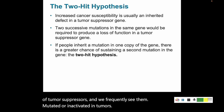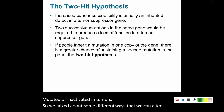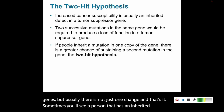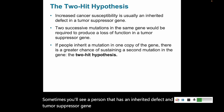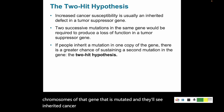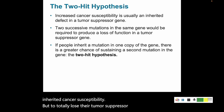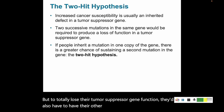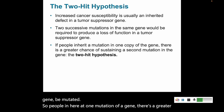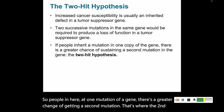Usually there is not just one change — it takes multiple changes. Sometimes a person has an inherited defect in a tumor suppressor gene, meaning one copy of that gene is already mutated, giving them inherited cancer susceptibility. But to totally lose tumor suppressor gene function, the other allele, the healthy allele, also has to be mutated. If people inherit one mutation of a gene, there's a greater chance of getting a second mutation — that's the basis of the two-hit hypothesis.